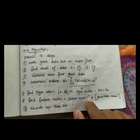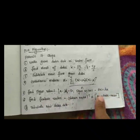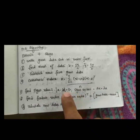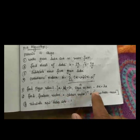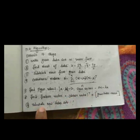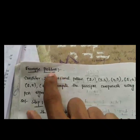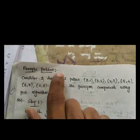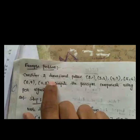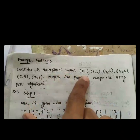Step six is finding the feature vector using the formula: obtained eigenvector transpose multiplied by (given data minus mean). Step seven is: using the obtained feature vector and given datasets, we construct the new dataset.